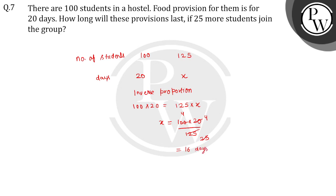16 days. We can clearly see that when the number of students increased, the food lasted fewer days. This confirms inverse proportion. I hope this question is clear to you. Thank you.